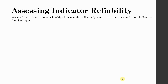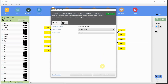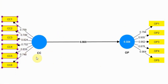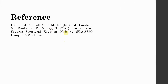To assess indicator reliability, we estimate the relationship between reflectively measured constructs and their indicators. All indicator loadings should be above the threshold value of 0.708, suggesting a sufficient level of indicator reliability. Variance explained is computed by squaring the loadings; it should be over 0.50. Let's have a look at our model and calculate the PLS algorithm — all loadings are over 0.708, so there is no issue of indicator reliability. For further reading on reliability, refer to the recommended text.